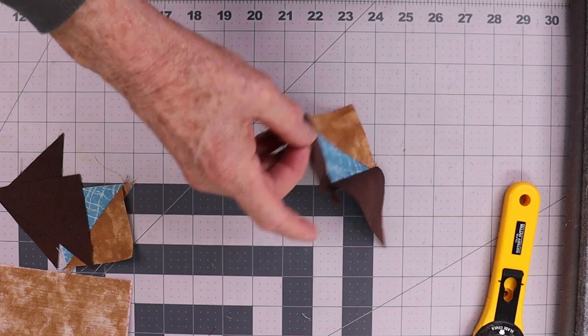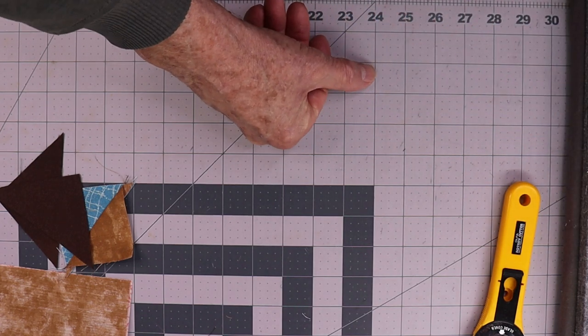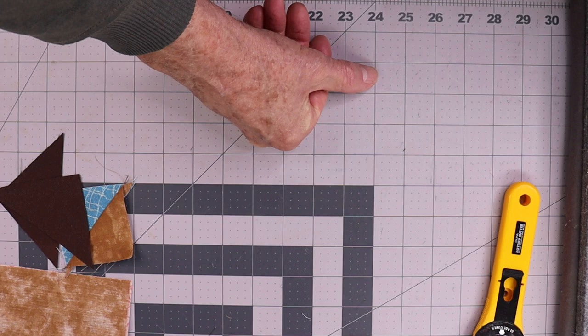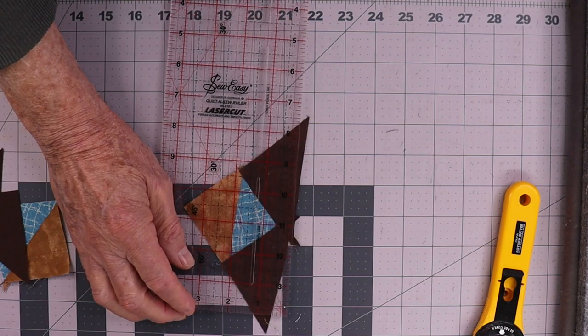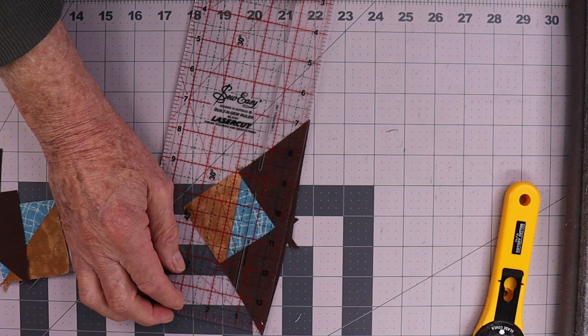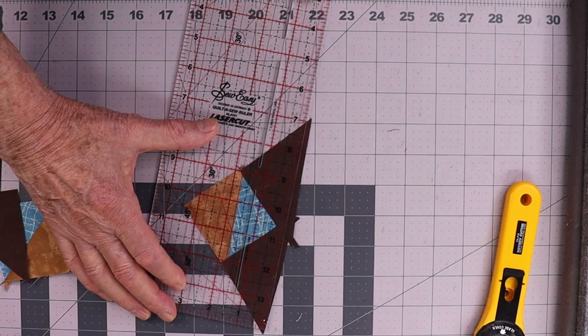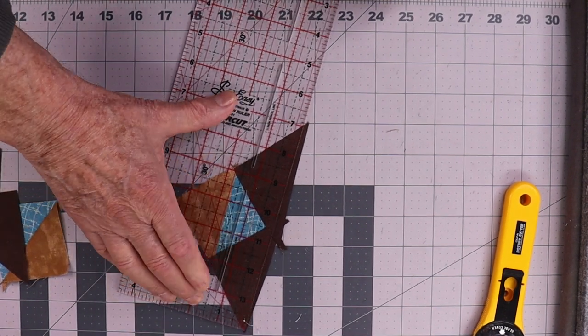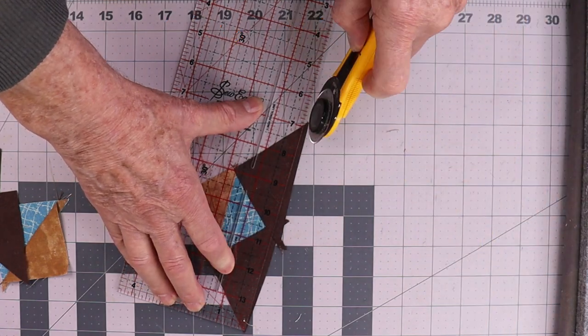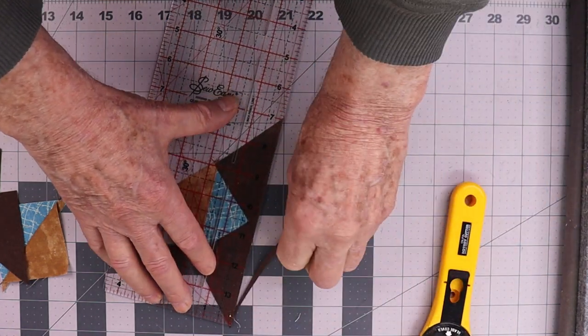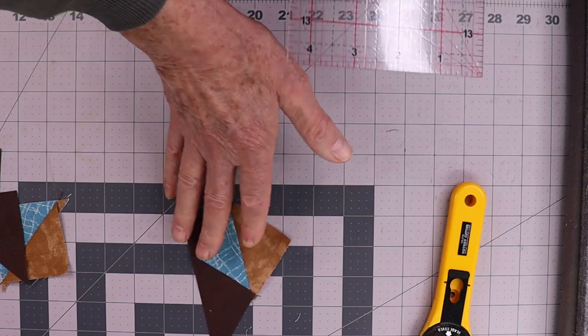I'm now going to press this and trim it back. I've left a fair amount on this. I'm using one of these lines on the ruler to go from point to point so it sits straight. And I've left a half inch seam allowance. A bit left over, but I always feel it's better to be sure than sorry. And that's it.